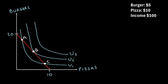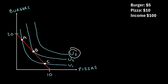Now every point on the indifference curve U2 gives you a higher level of utility than every point on the indifference curve U1. And similarly, U3 gives you even more utility. Now in the real world, you would love to consume a combination of burgers and pizzas that lies on indifference curve U3, because this gives you the most utility.